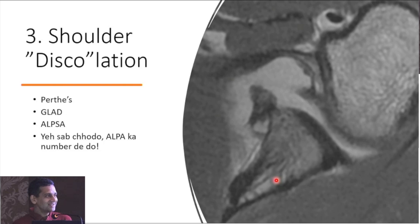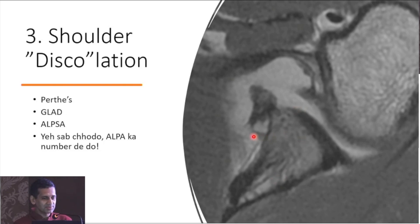A GLAD lesion is basically when you see cartilage coming off — there is a little bit of cartilage off here — but the more important thing is when you see a Bankart lesion and you see it's buckled inside.